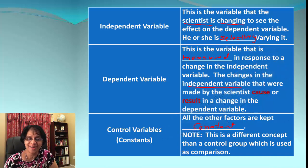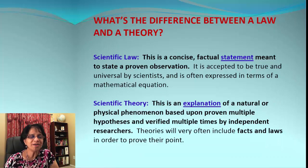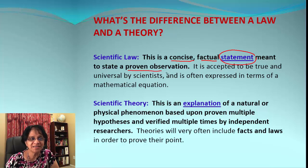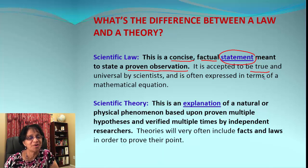Now moving on to find out what is the difference between a law and a theory. A scientific law is a concise, factual statement meant to state a proven observation. It is accepted to be true and universal by scientists, and is often expressed in terms of a mathematical equation.